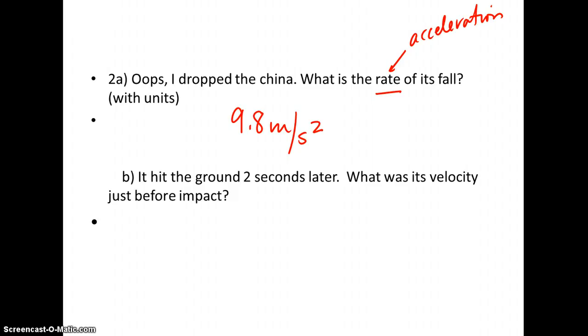And when it hits the ground two seconds later, what is the velocity? Well, we know that in one second, it traveled from 0 meters per second to 9.8 meters per second. Okay, that took one second because I know from up here, every one second it travels 9.8 meters faster than it did before. So 0 plus 9.8 meters per second.